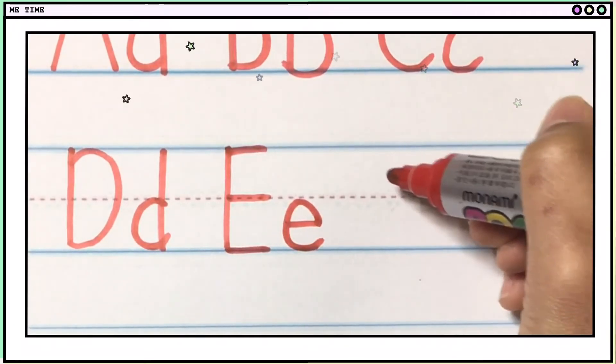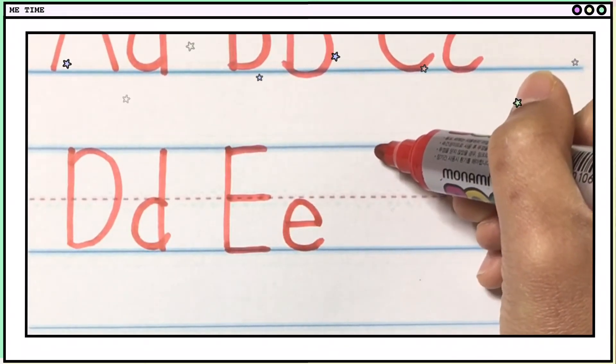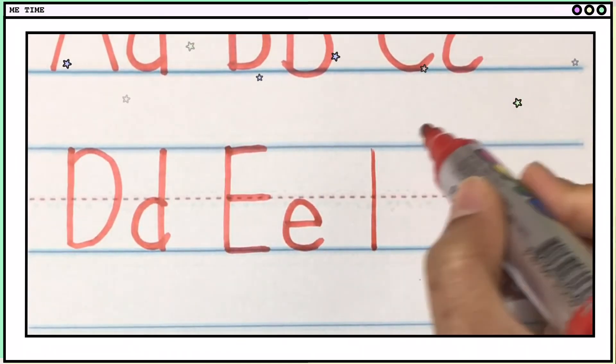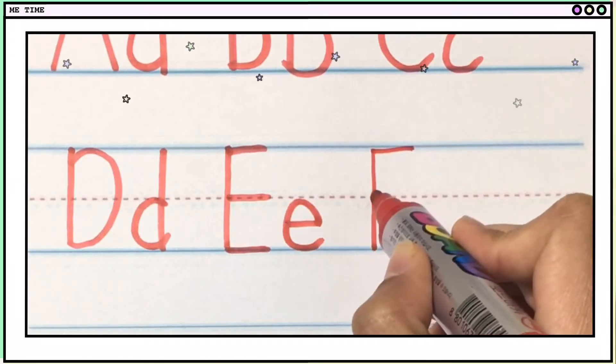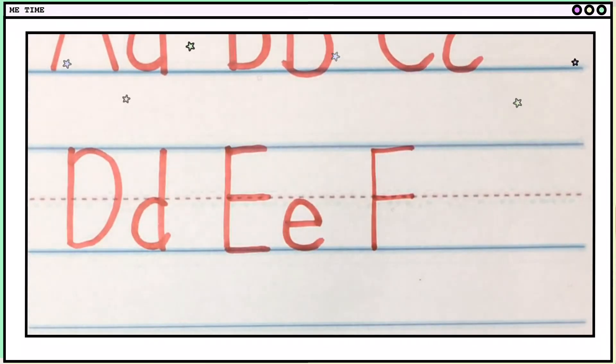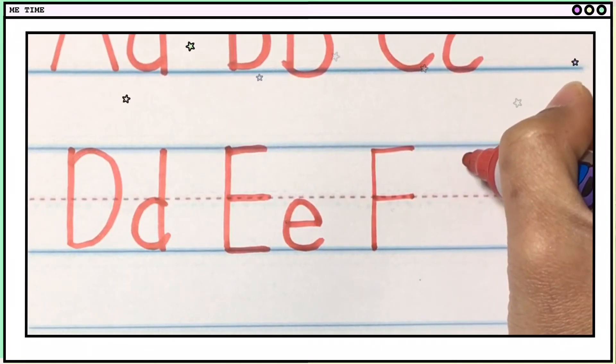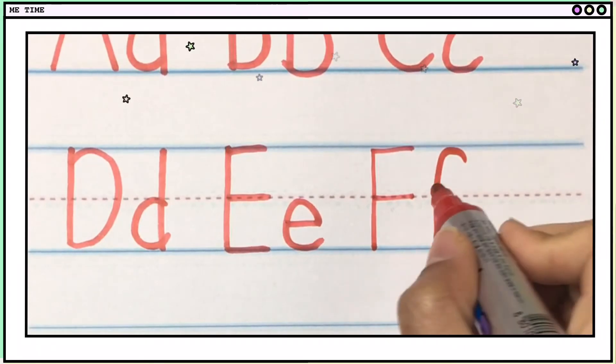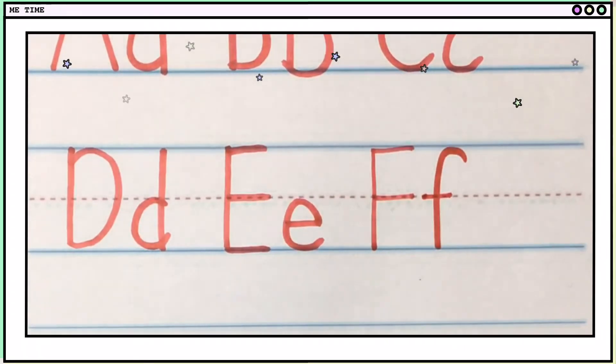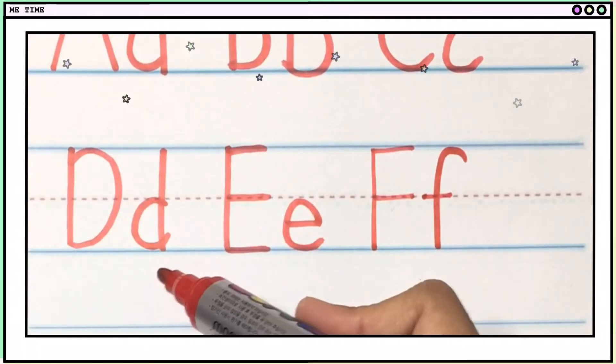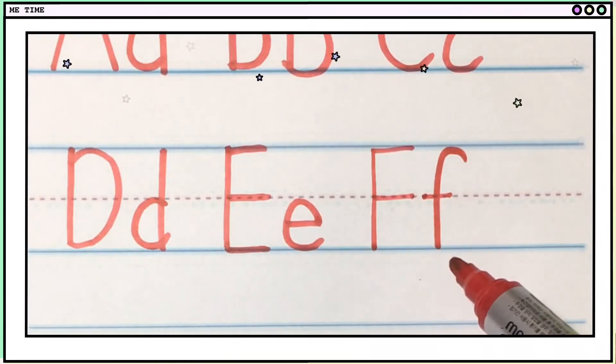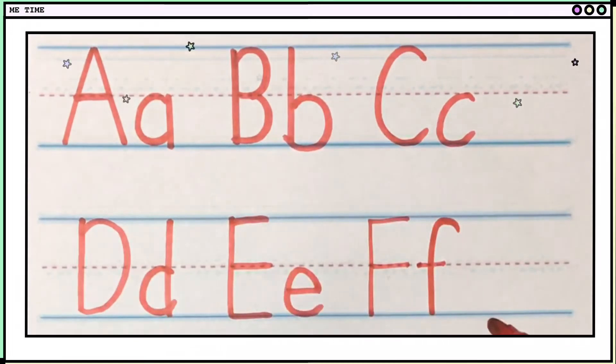Next is big F. Big F is a little same with E. So you make one straight line, and then two lines. One, two. Okay. Small F, you start here. And then you make a curve, and then straight line. And then here is cross. So big D, small D. Big E, small E. Big F, small F. A, B, C, D, E, F. Okay.